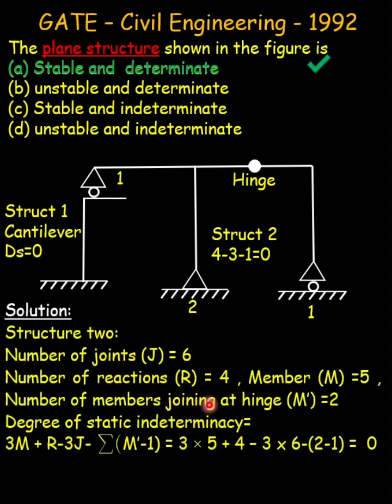The formula is 3M + R - 3J - Σ(M'-1) which in this case equals zero.